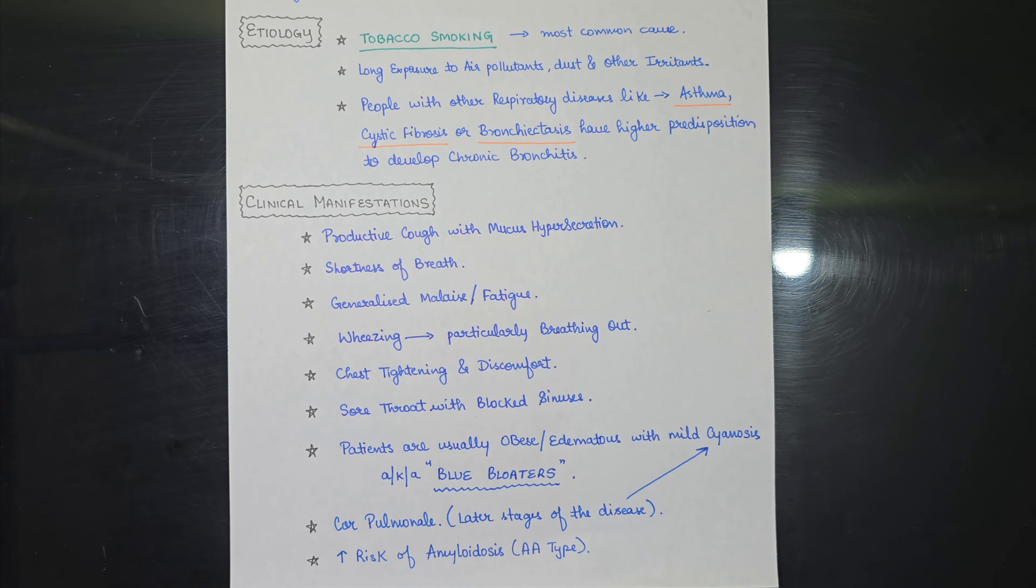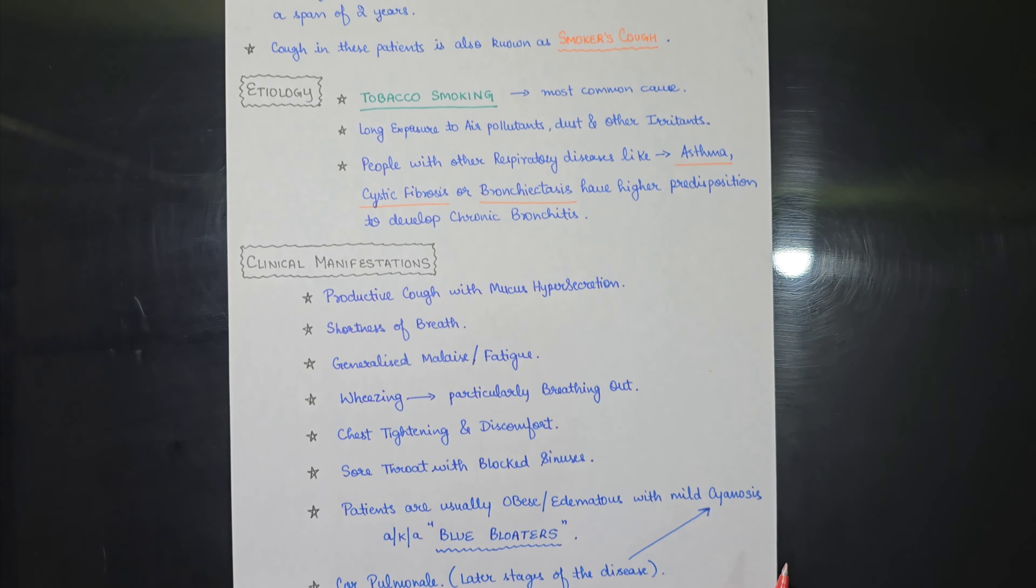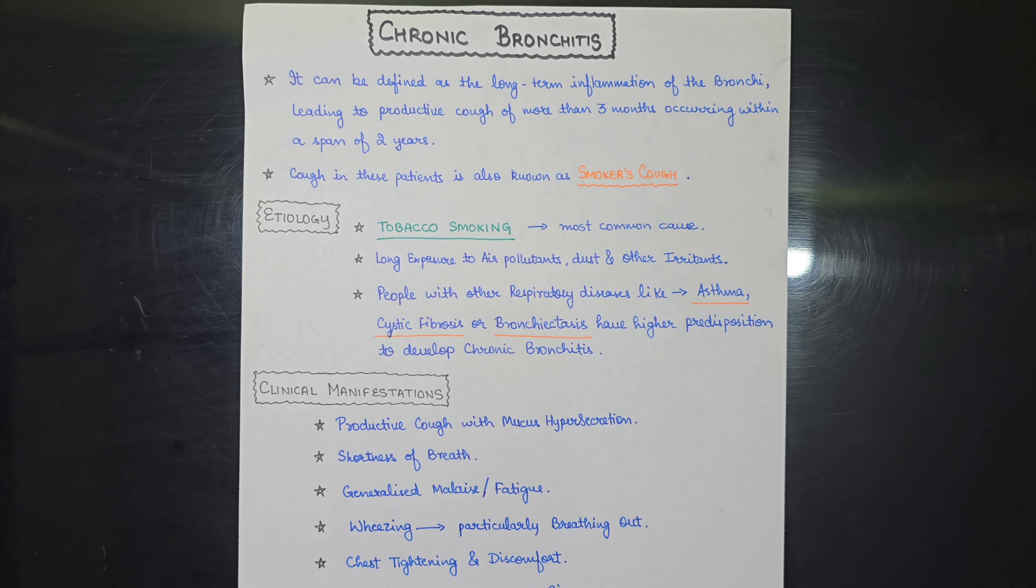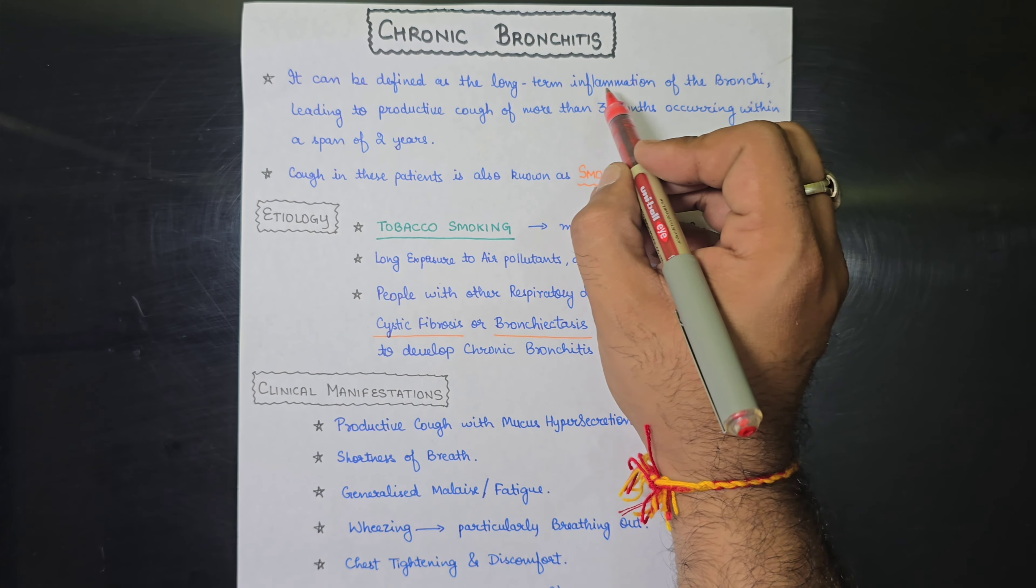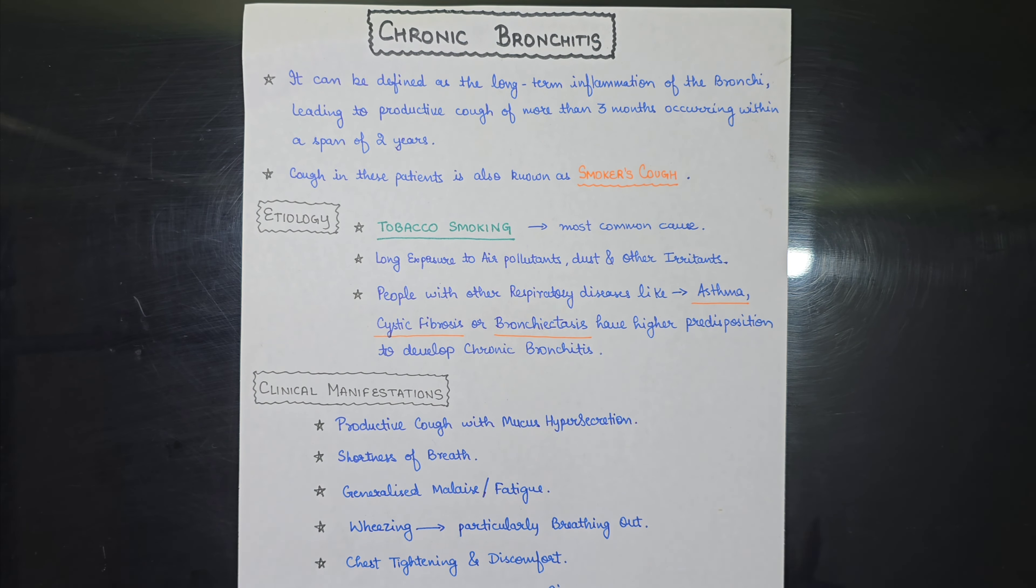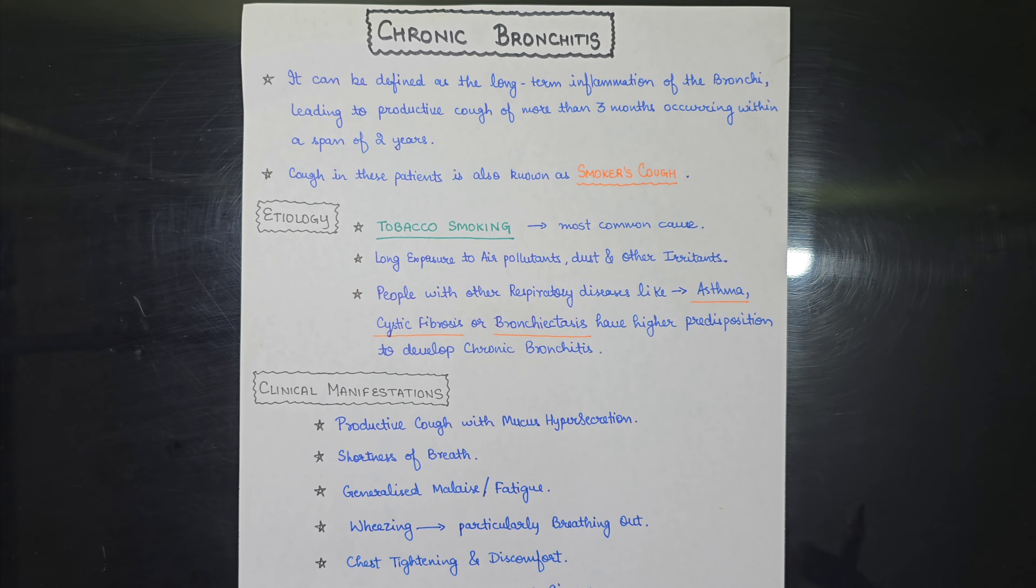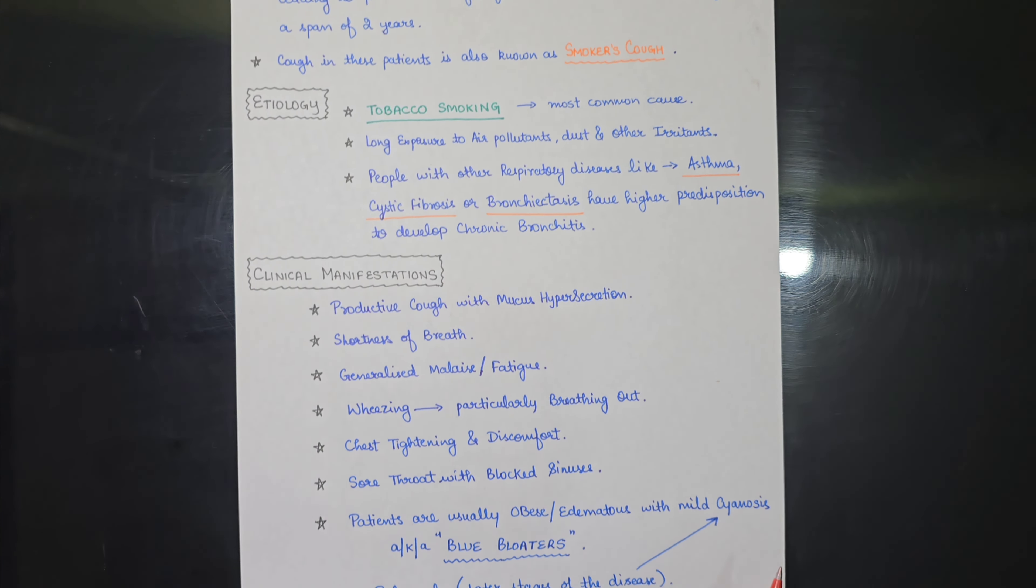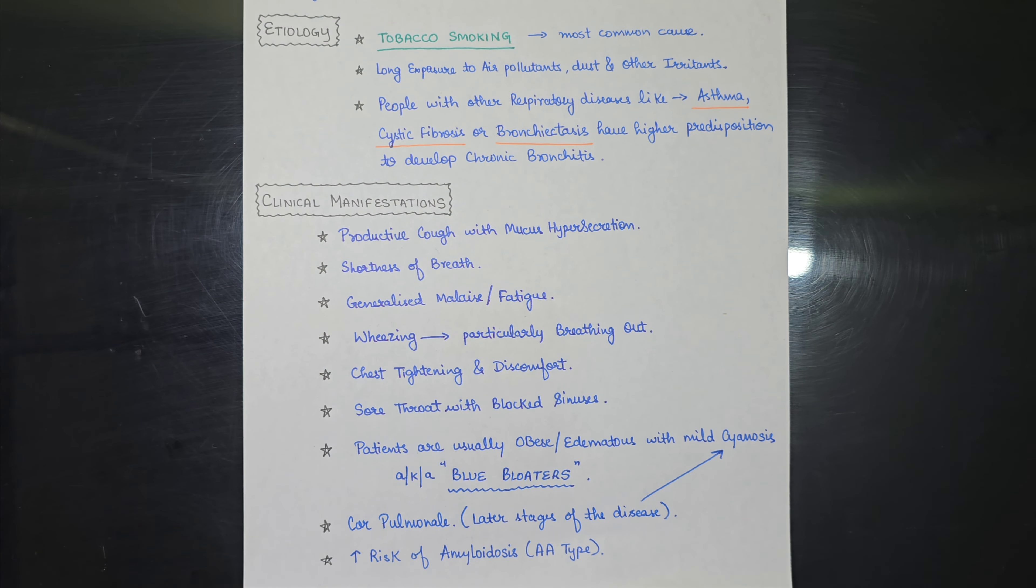Also another clinical manifestation, which is although rare, but the risk of amyloidosis specifically AA type is higher in patients of chronic bronchitis. It is mainly due to the bronchiectasis and the inflammation is going on for a longer period of time. It is chronic inflammation, you can say. So it can lead to the risk of amyloidosis, and amyloidosis which type, AA type.